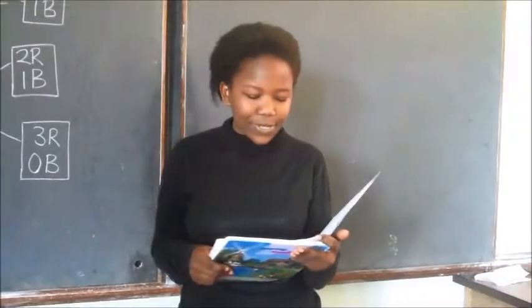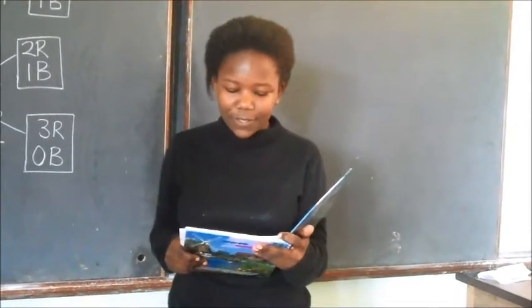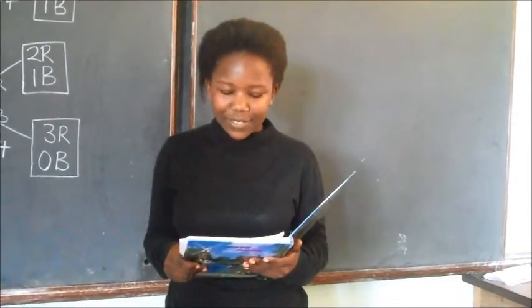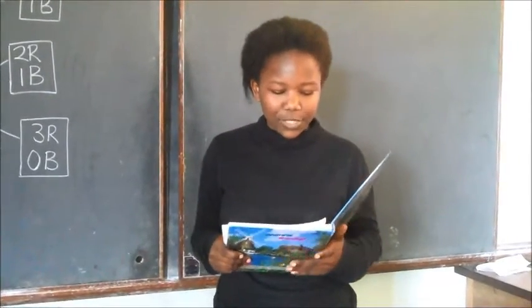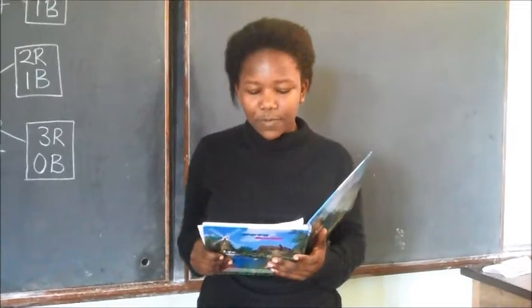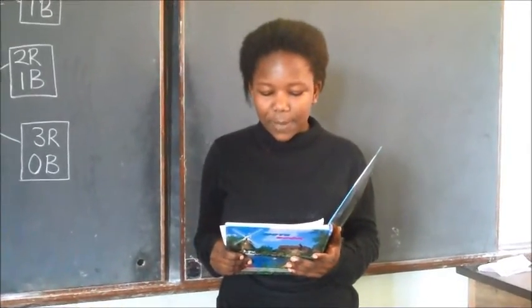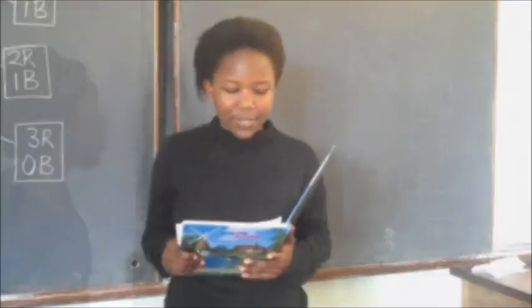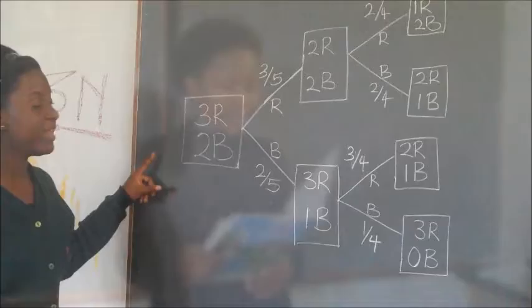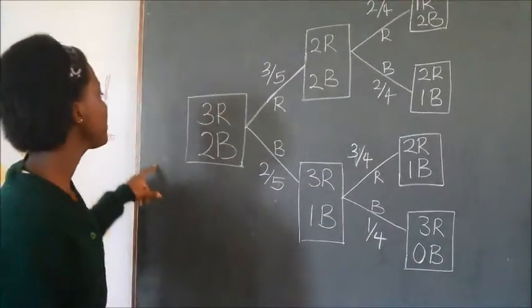A table has three red sleepers and two blue sleepers. If two sleepers are picked randomly from the table in succession, find the probability that the second sleeper picked is red if the first pick is red. I will draw a probability tree for the five sleepers.